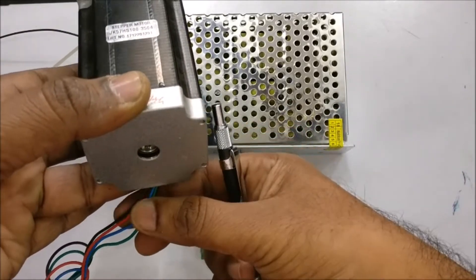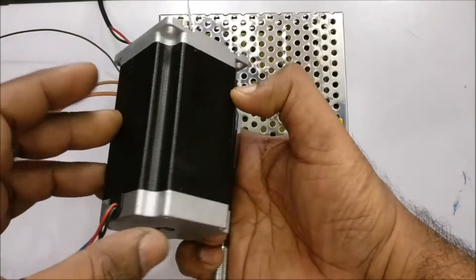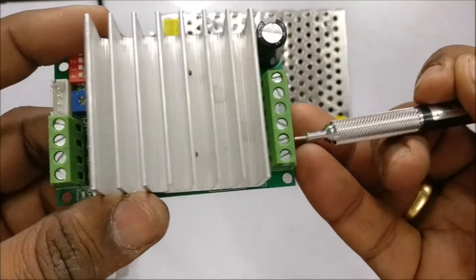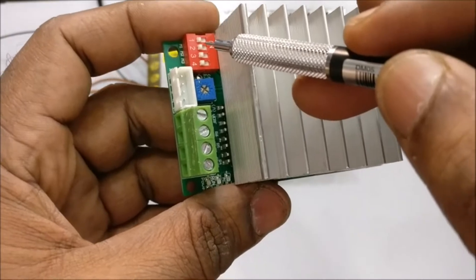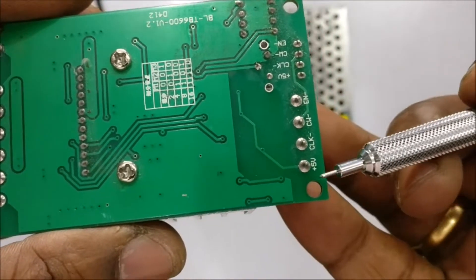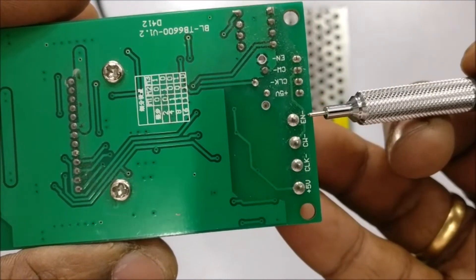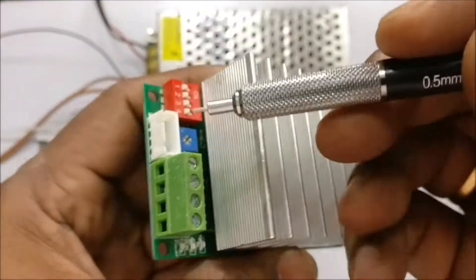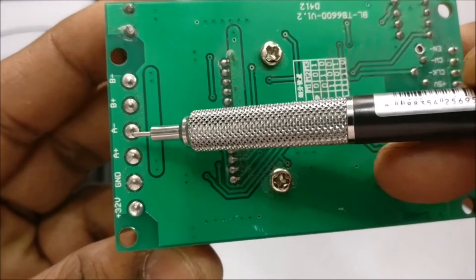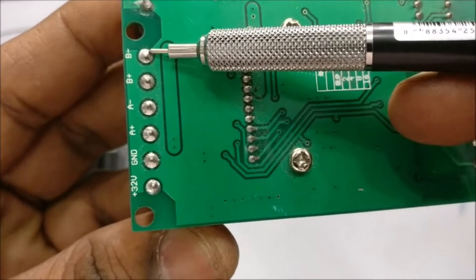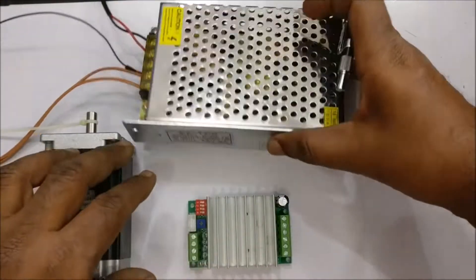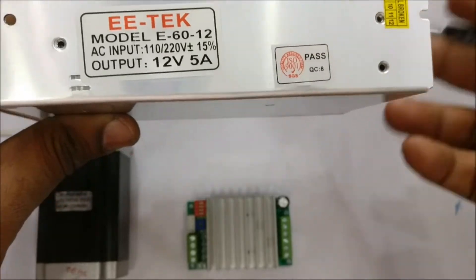Generally these stepper motors have 4 wires, that is bipolar, which can be driven by this H-Bridge TB6600. This 6600 board has connectors on both sides and a dip switch and a potentiometer. One side of the connector is for enable, CLK, CW and plus 5 volt, and the other side is to connect the motor, two phases of motor, A minus A plus, B minus B plus, and then the power source. It can accept up to 32 volt supply. We are using here 12 volt 5 ampere SMPS as power source.